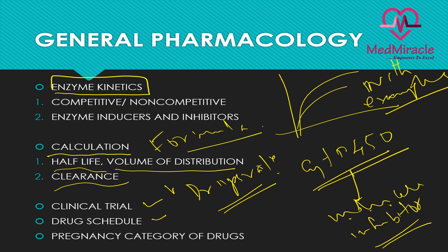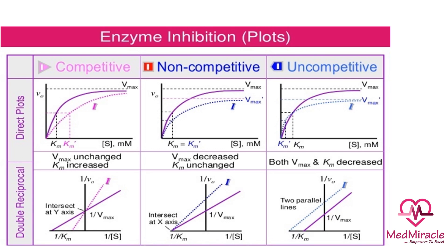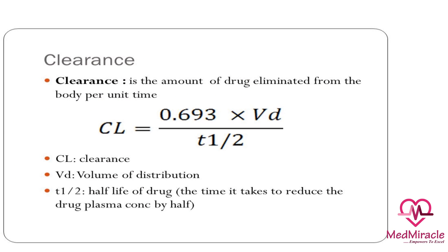There are two tables — one about clinical trials, another about drug schedules — and another about the pregnancy category of drugs. In enzyme kinetics, competitive and non-competitive inhibition with examples must be known. For the formula section, most questions give certain values and ask you to calculate clearance or t-half, so be thorough with these formulas.